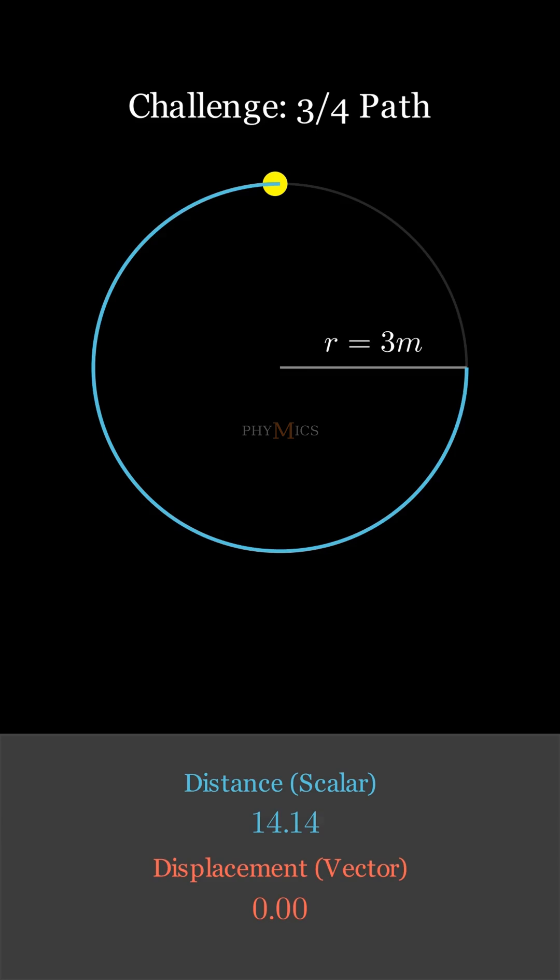The solution to the problem is that the distance, being the actual path travelled, will be calculated as 3/4 of the circumference of a circle. Substituting the value of r as 3 meters in the expression, we are left with distance as 14.14 meters.